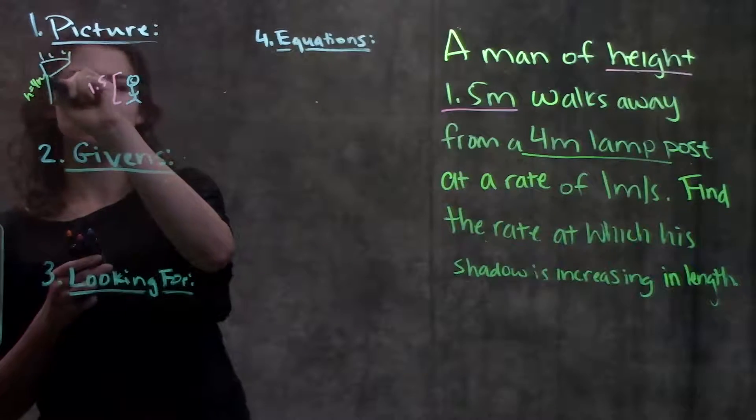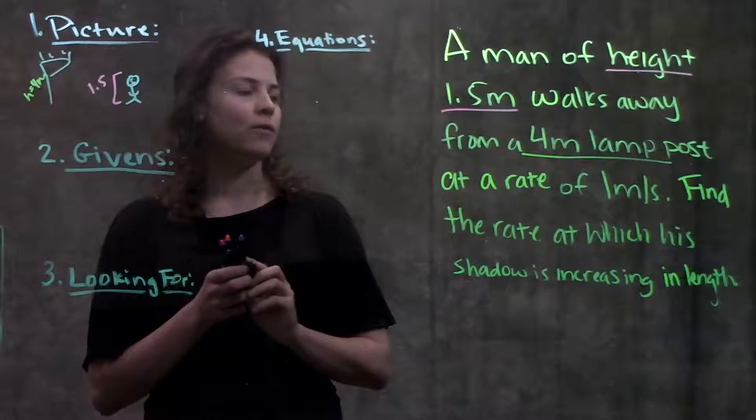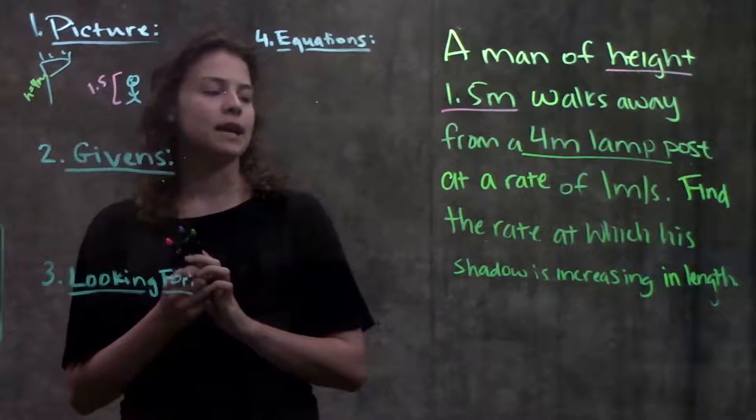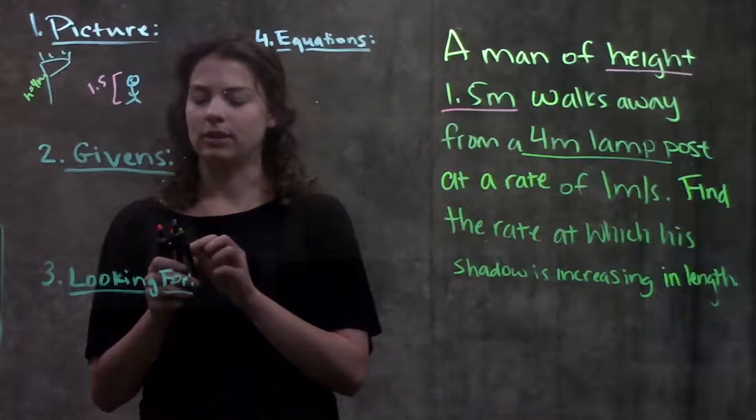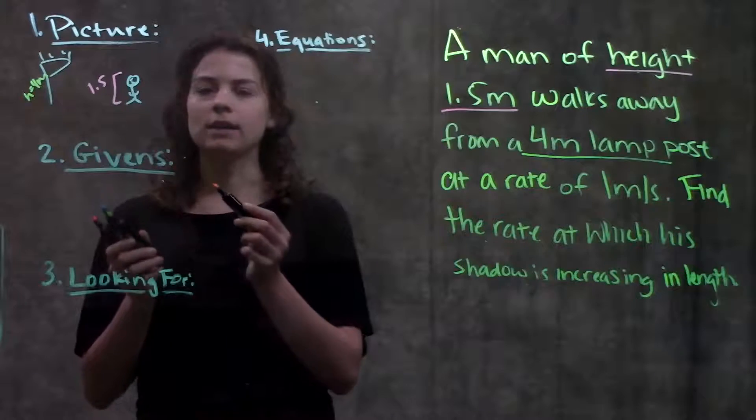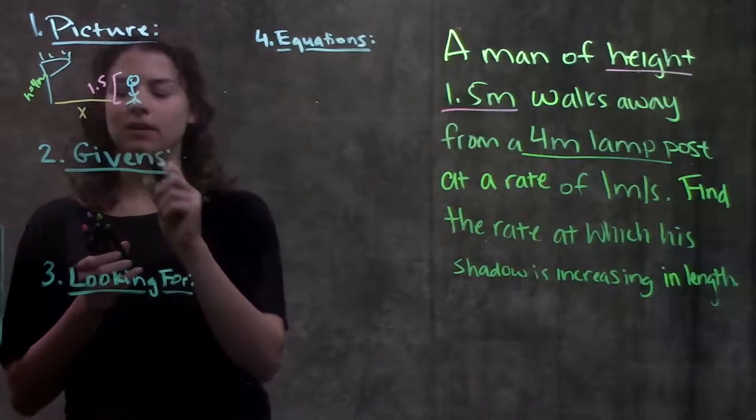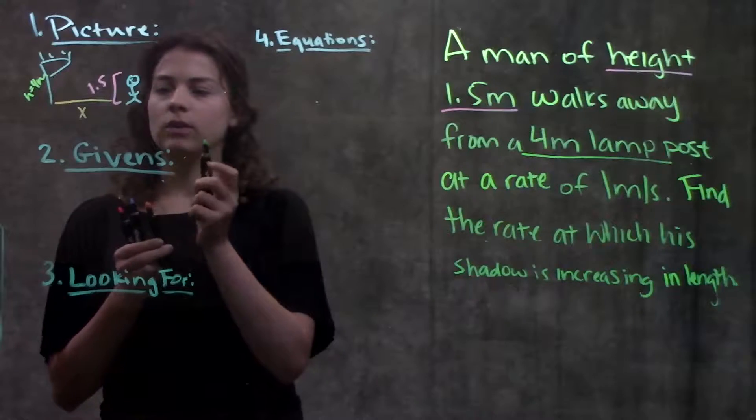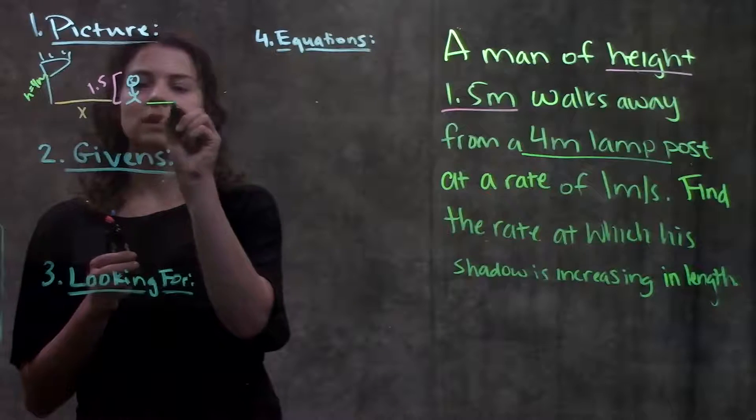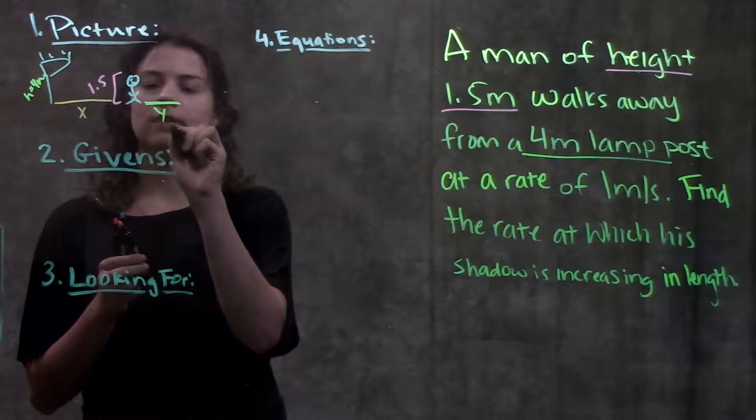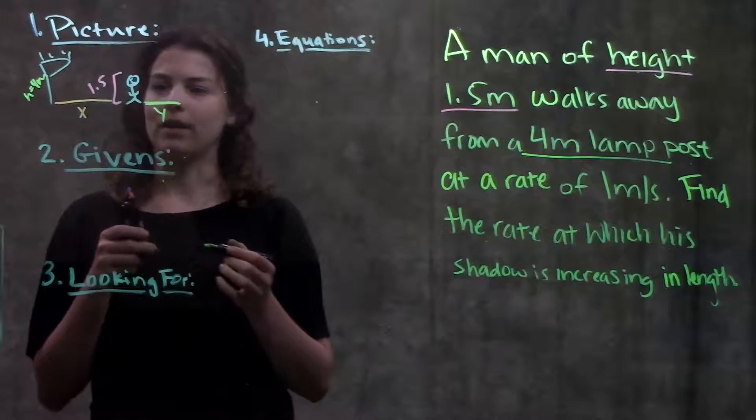So this height is 4 meters at a rate of 1 meter per second and it's asking find the rate at which his shadow is increasing. So I can't really label anything else but I am going to say that he's walking away and this distance that he's walked away I'm going to label x and we're interested in his shadow and his shadow is going to be over here. I'm going to label this value as y. All right drew my picture.